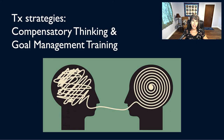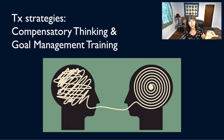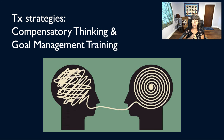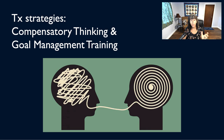Further strategies include compensatory thinking, and an example of this is goal management training. Compensatory thinking strategies involve demonstrating the process and facilitating the client to think through the task rather than just running off and doing it. Within goal management training, the first step is stop — get your attention. Then define what is the task or goal. The third step is to list out the steps verbally, maybe in writing. The fourth is learn — self-assessment of whether you know the steps or need to go back and how to execute them. And the fifth and final step is check: am I doing what I planned to do?